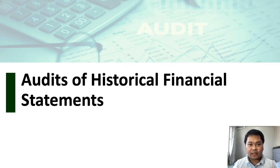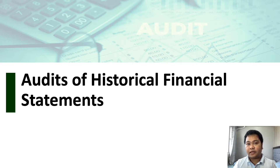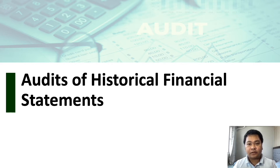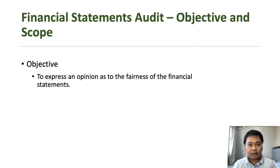Finally, after we have discussed the different kinds of assurance services and different kinds of audit, we will now settle for a specific type of assurance and audit service, which is the audit of historical financial statements. This is the engagement that we will be discussing for the rest of this course.